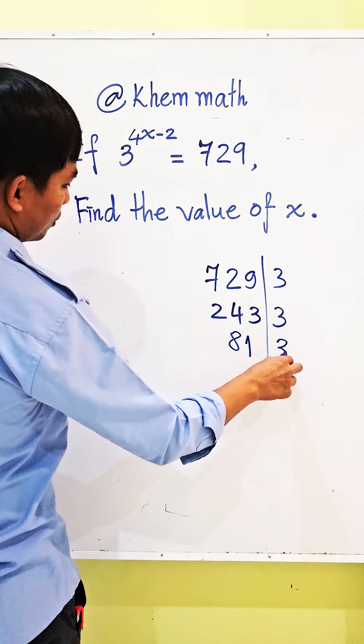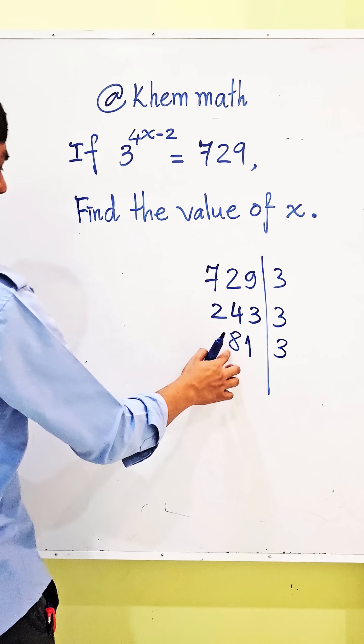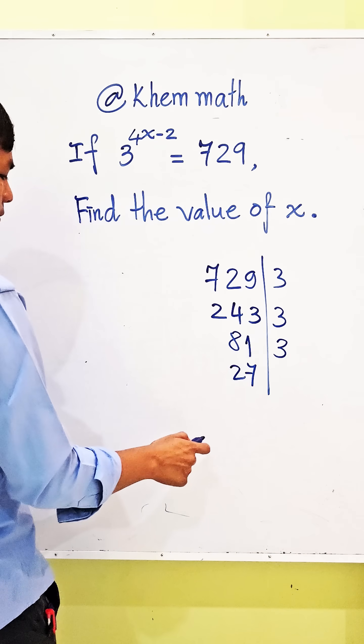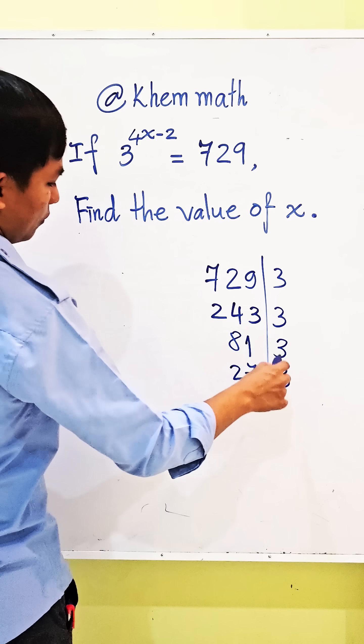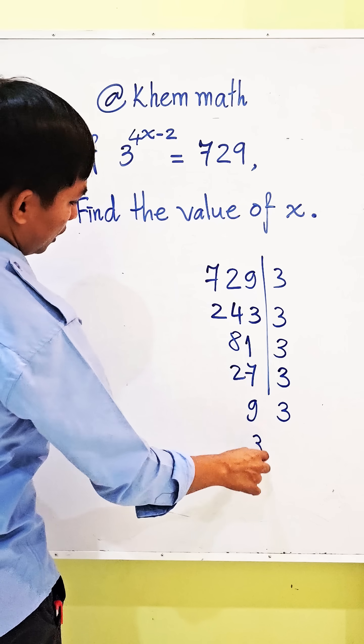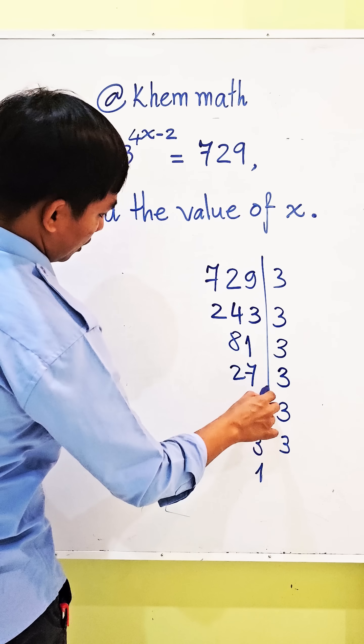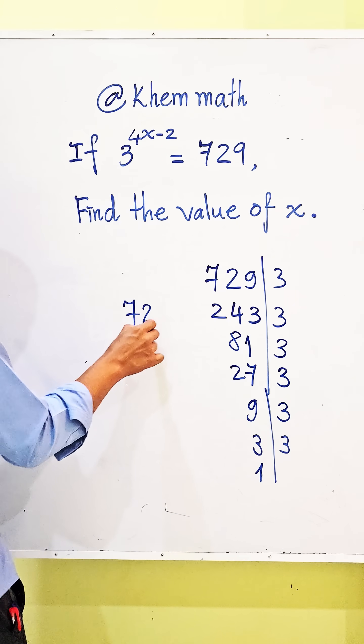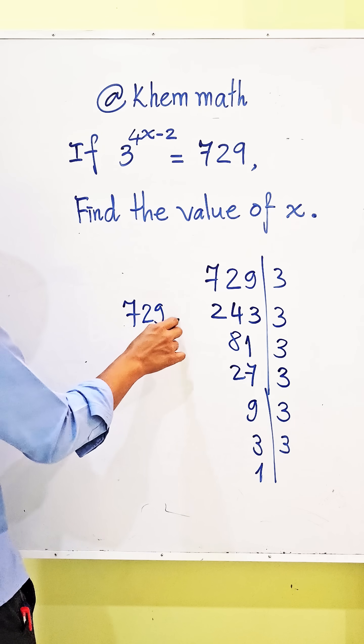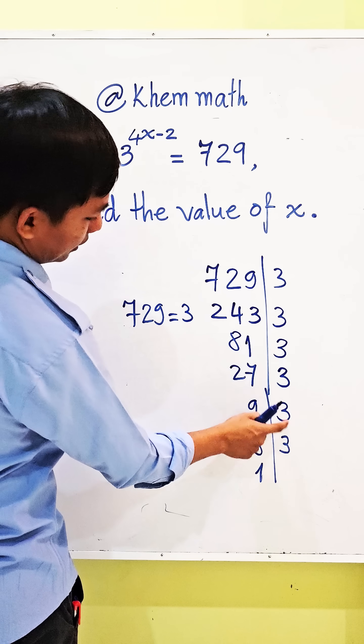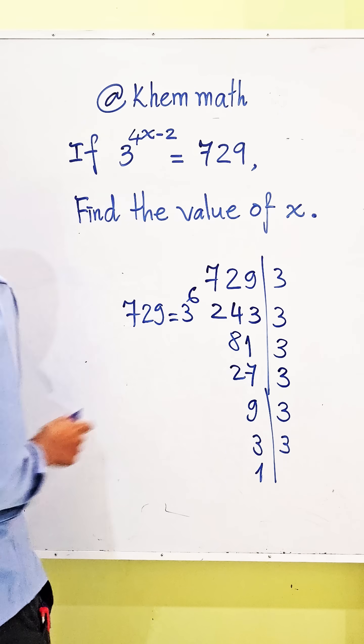And 3 divided by 3, we get 1. So 729 is equal to 3 power 1, 2, 3, 4, 5, 6. That's 3 power 6.